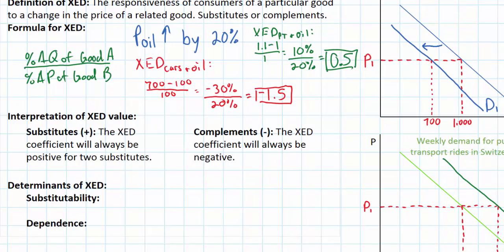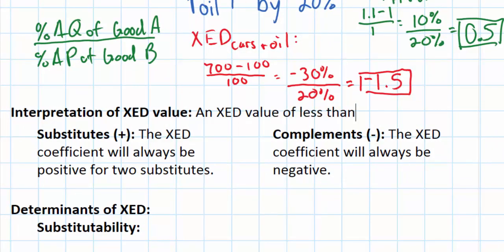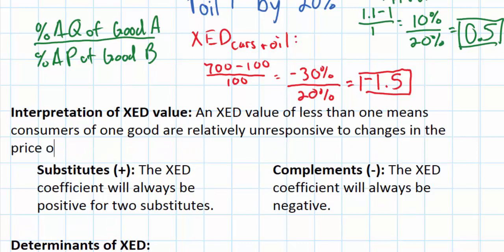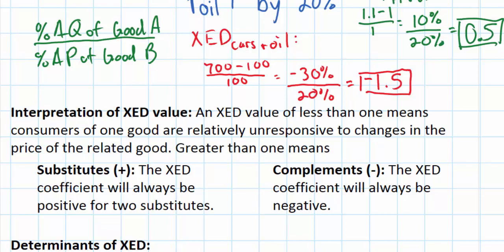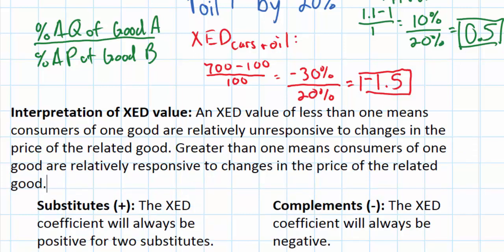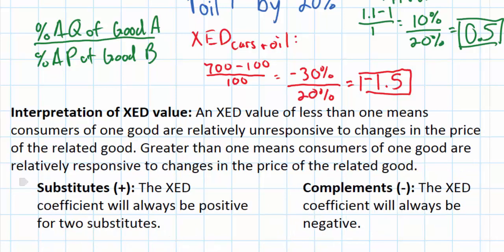Why is XED always positive for two substitutes? Clearly because there is a direct relationship between the price of one good and the demand for its substitute. As oil prices rise, people will choose to drive their cars less and take more public transportation, so the XED coefficient reflects this direct relationship and is always positive. To further interpret the XED value, we must remember that any time the elasticity coefficient is less than 1, demand is inelastic; any time it is greater than 1, demand is elastic. An XED value of less than 1 means consumers of one good are relatively unresponsive to changes in the price of the related good, while a value greater than 1 means they are relatively responsive. That's the same interpretation we use for PED, PES, and income elasticity of demand.